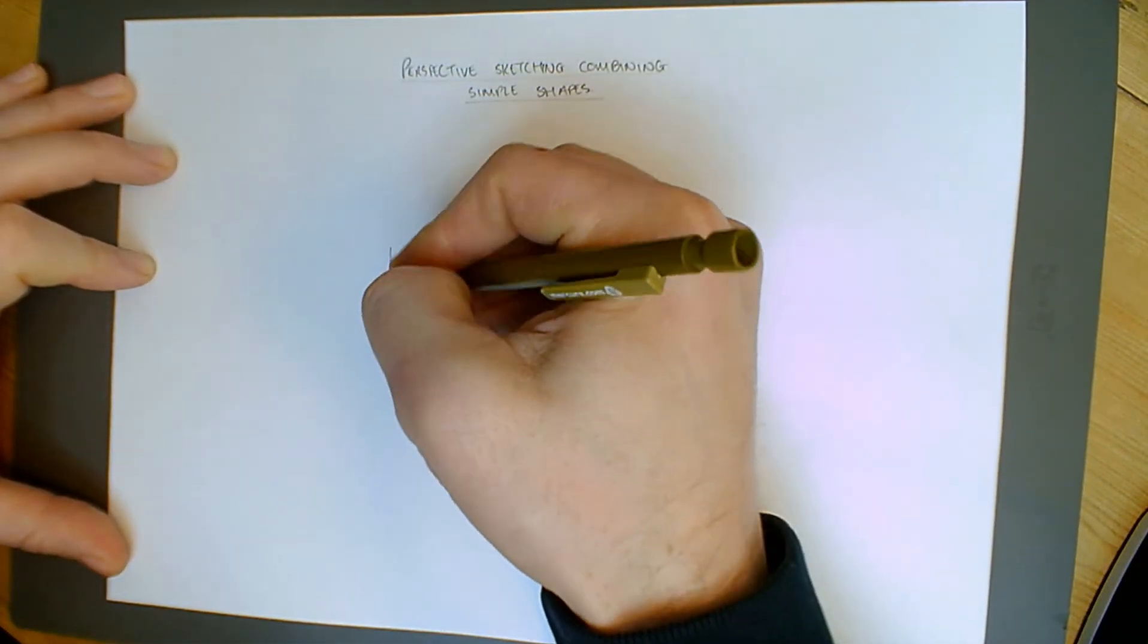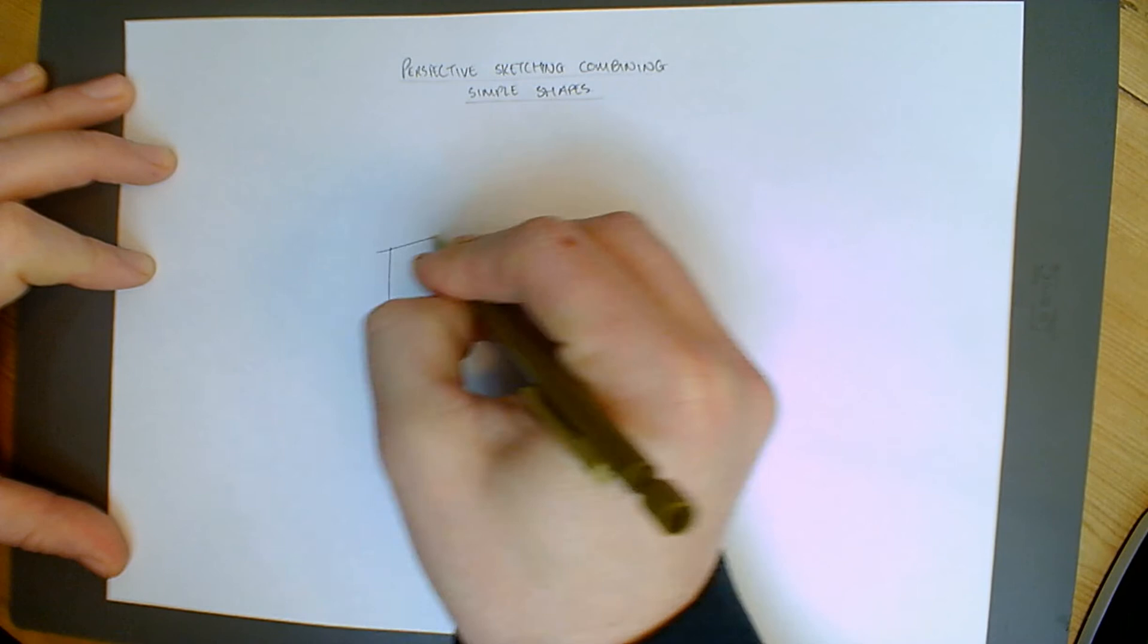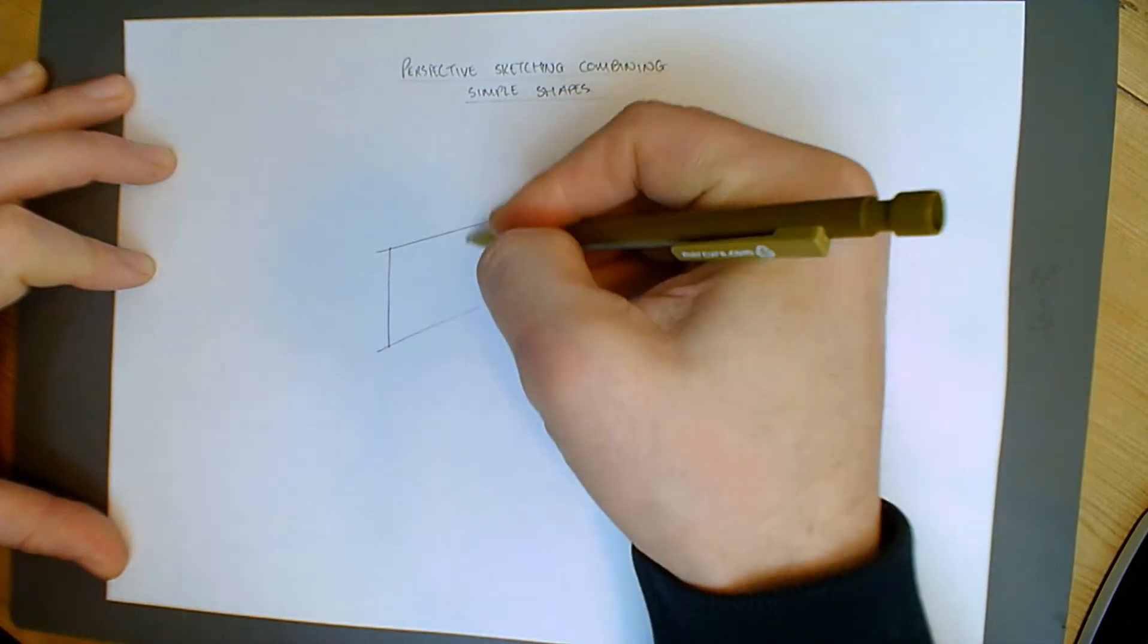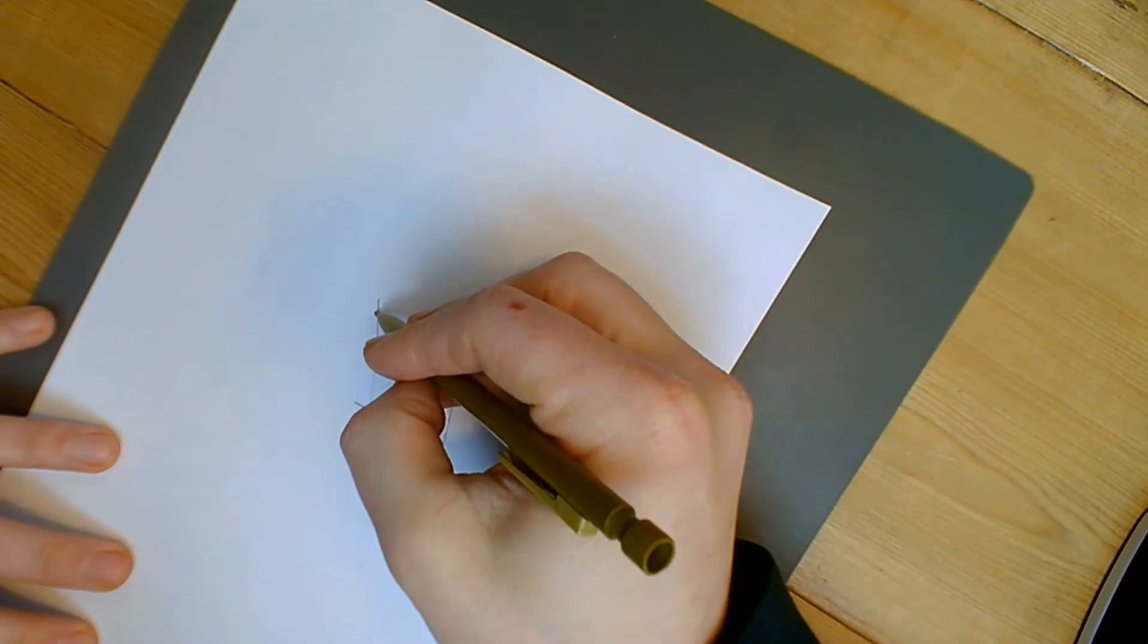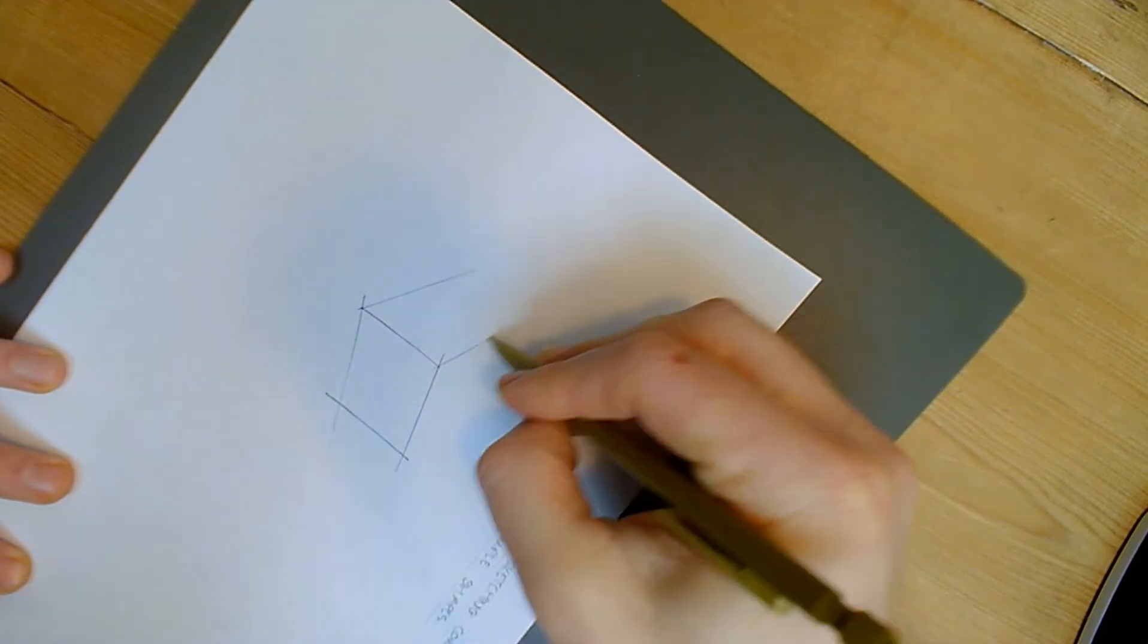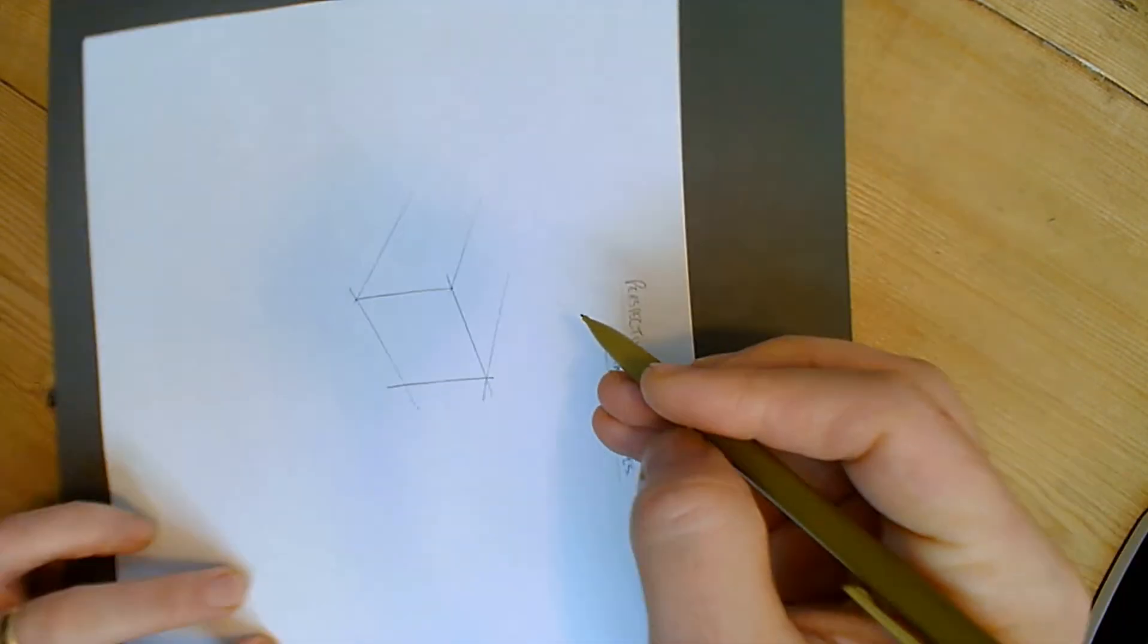So if we start off now, we're not using horizon lines and vanishing points at this stage. We've practiced already getting rid of those. We just have to make sure that our lines are converging and we're using them imaginary vanishing points in our heads.